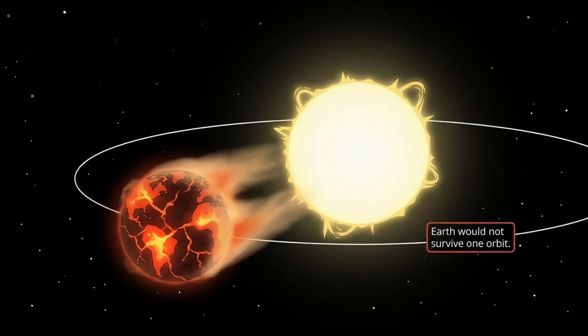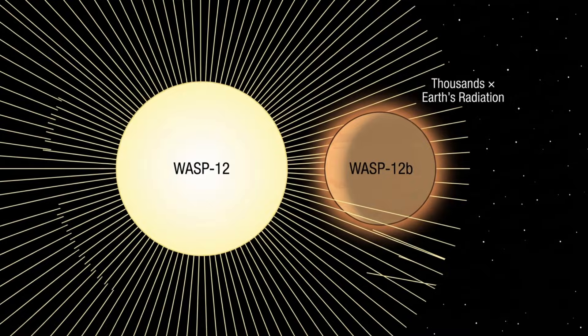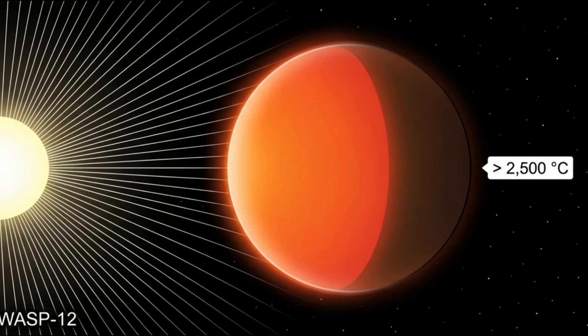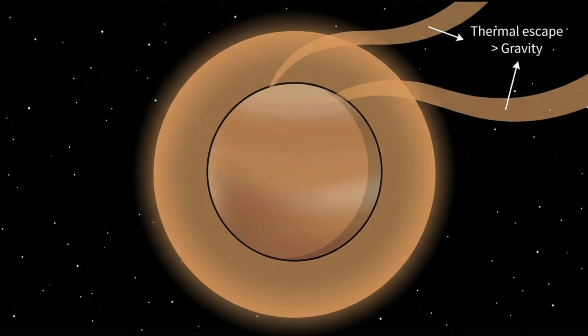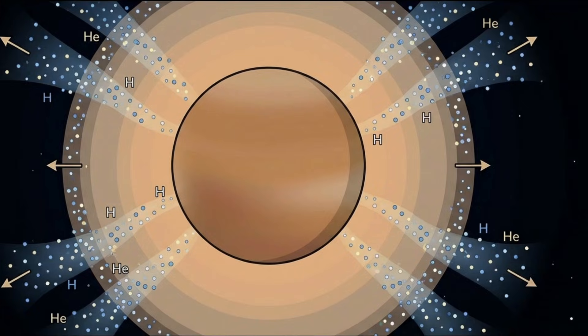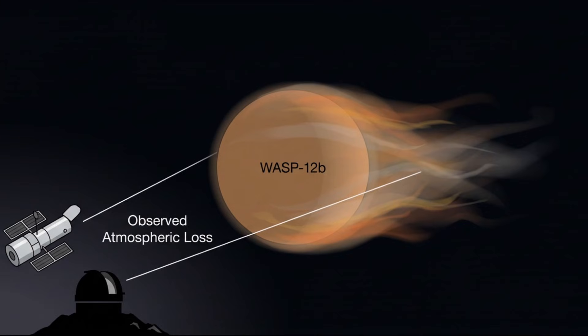At this range, the planet receives thousands of times more radiation than Earth gets from the Sun. Temperatures exceed 2,500 degrees Celsius, hot enough to break apart molecules and expand the planet's atmosphere far beyond normal limits. The upper layers become so heated that gravity can no longer hold them in place. Hydrogen and helium begin to escape into space. This is not a future prediction. Astronomers directly observe this loss happening now.